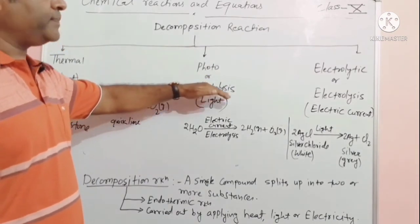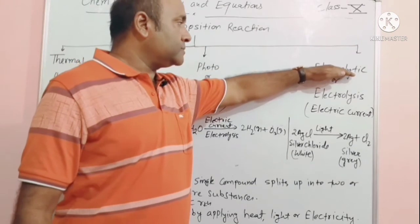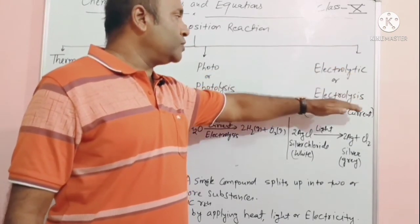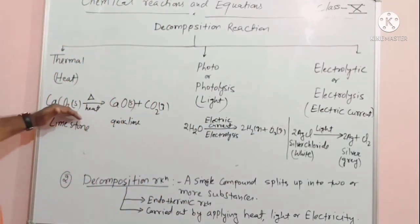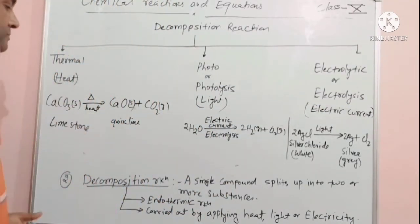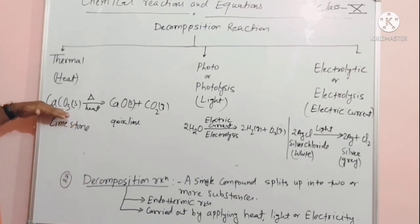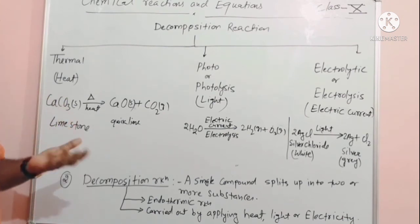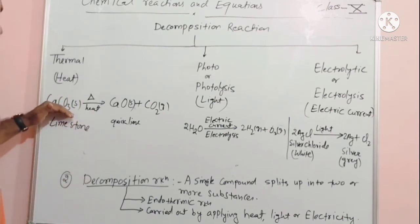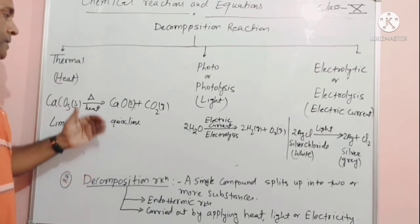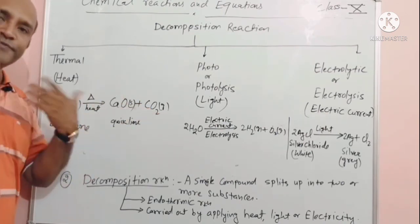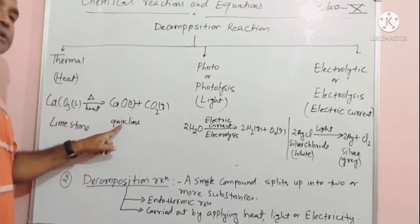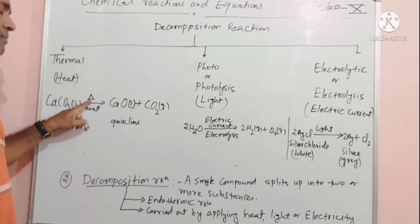Photo decomposition reaction is also called photolysis, and electrolytic decomposition reaction is also called electrolysis. An example of thermal decomposition reaction: CaCO3 (calcium carbonate), also called limestone, when heated produces calcium oxide and carbon dioxide. Another name of calcium oxide is quick lime. Here, delta (Δ) means heat.